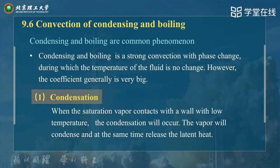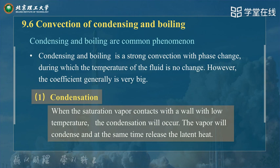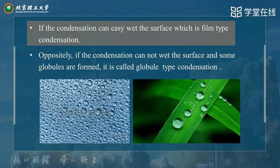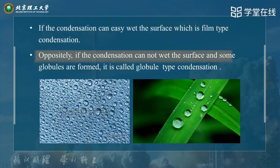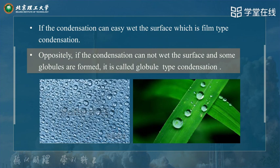1. Condensation. When the saturation vapor contacts a wall with low temperature, condensation will occur. The vapor will condense and at the same time release the latent heat. If the condensate can easily wet the surface, it is called film type condensation. Oppositely, if the condensate cannot wet the surface, some globules are formed — it is called globule type condensation.